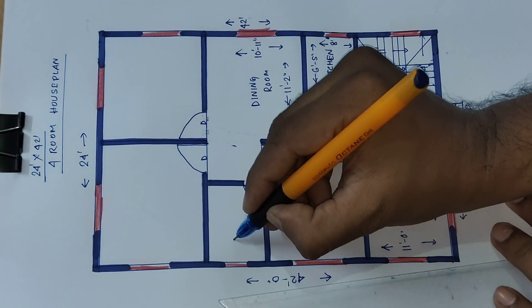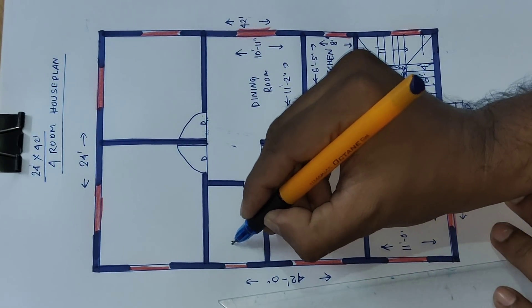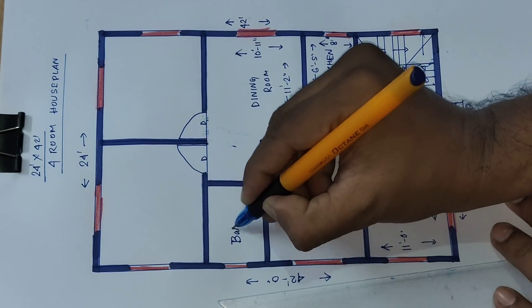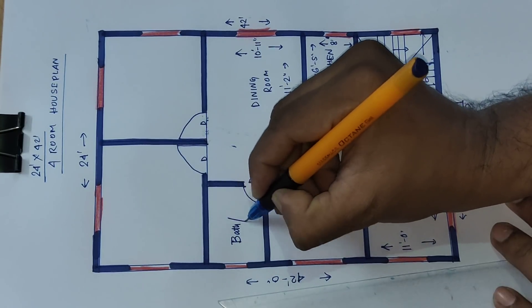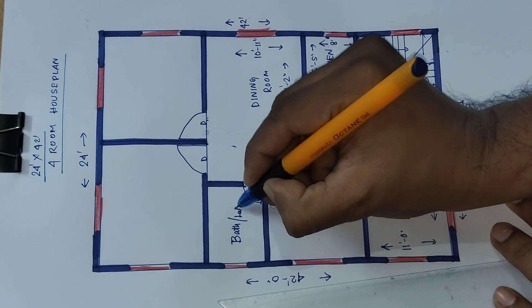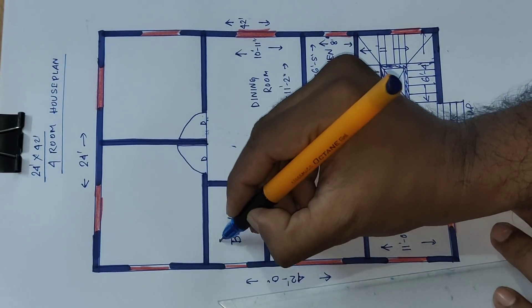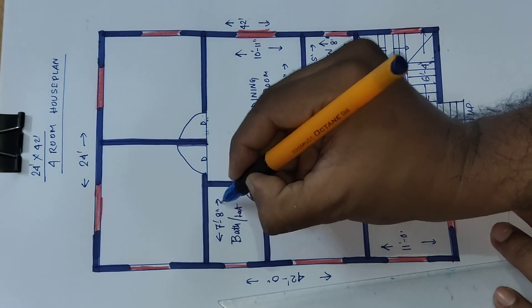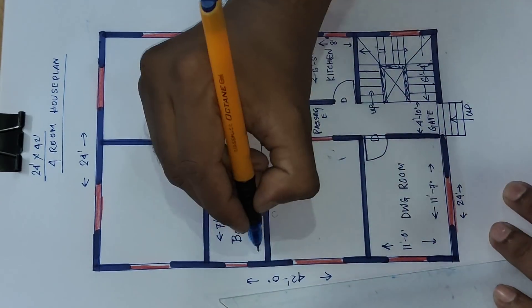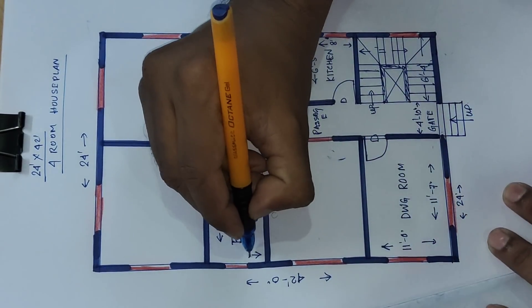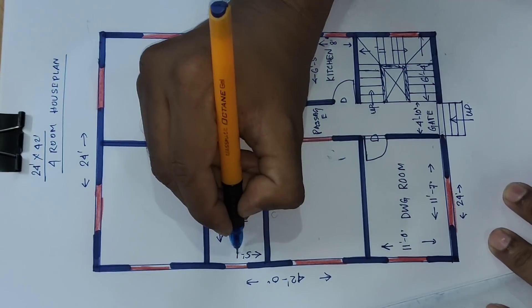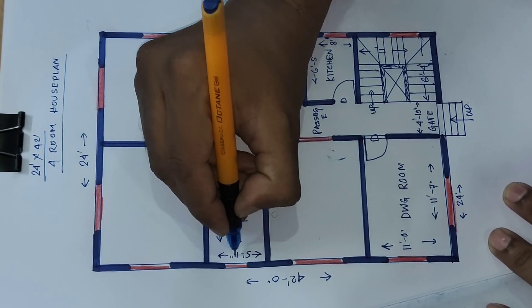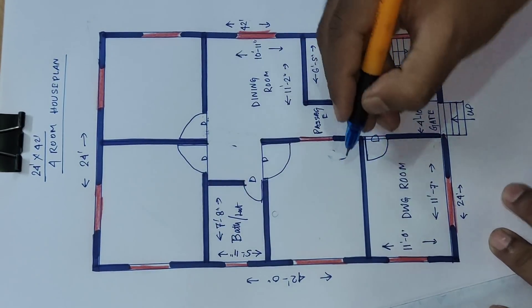And toilet, bath, inlet: 7 feet 8 inch and 5 feet 11 inch. Okay.